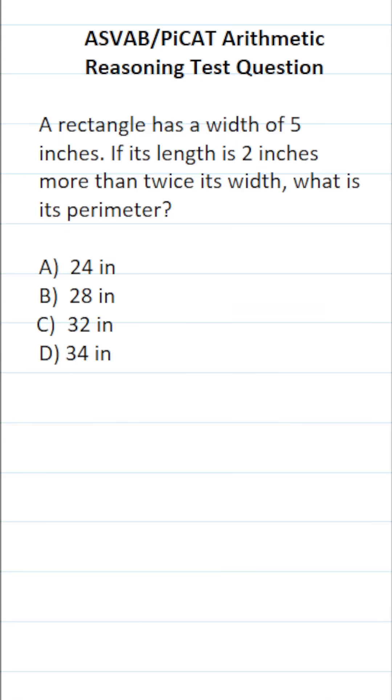This arithmetic reasoning practice test question for the ASVAB and PiCAT says: a rectangle has a width of 5 inches. If its length is 2 inches more than twice its width, what is its perimeter?